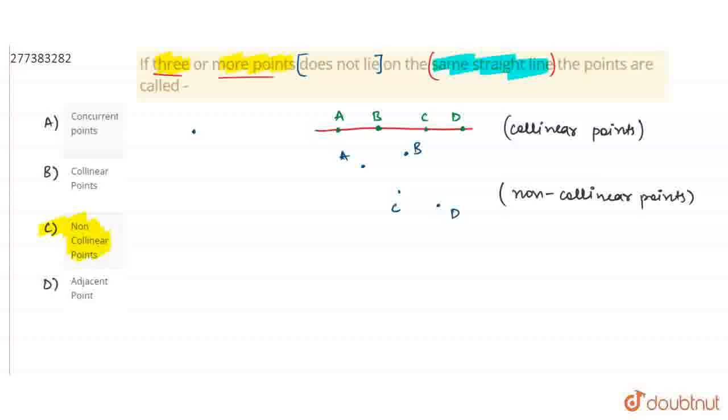So, the second option is collinear points. If points don't lie in the same straight line, then it cannot be collinear points. So, the B option is incorrect. The C option is correct.